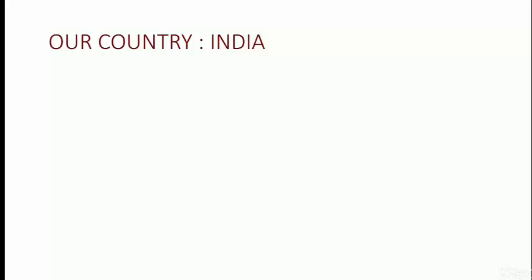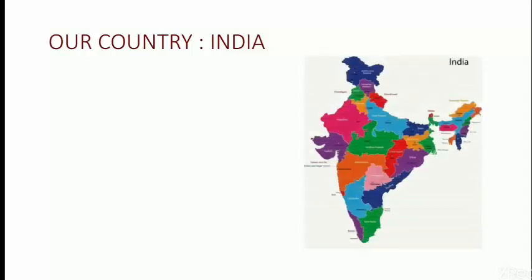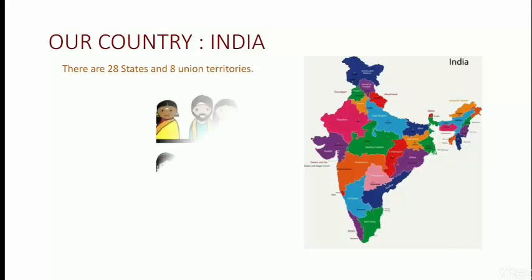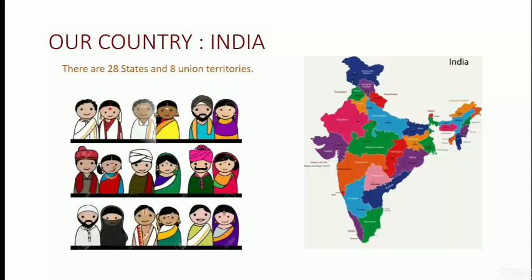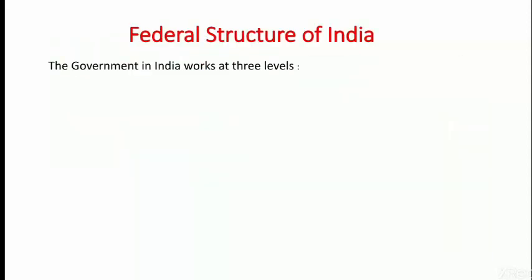Let us begin with our country India. Here you can see the map of India. Our country has 28 states and 8 union territories. The entire country is divided on the basis of various races and cultures, and the segregation of states was on the basis of language. Nearly more than 1,600 languages are spoken in our country.